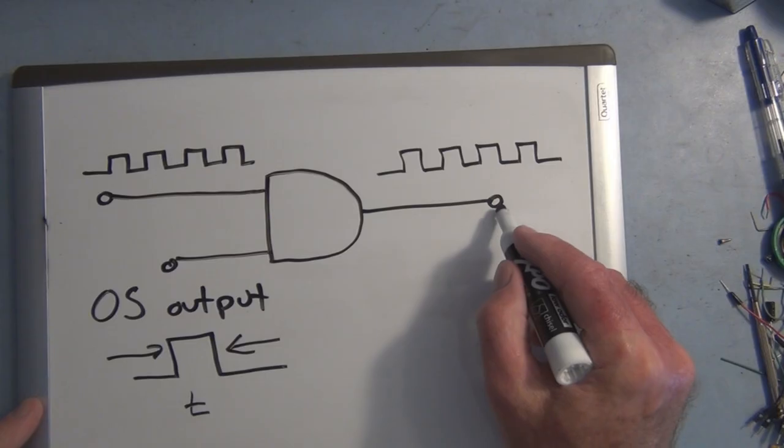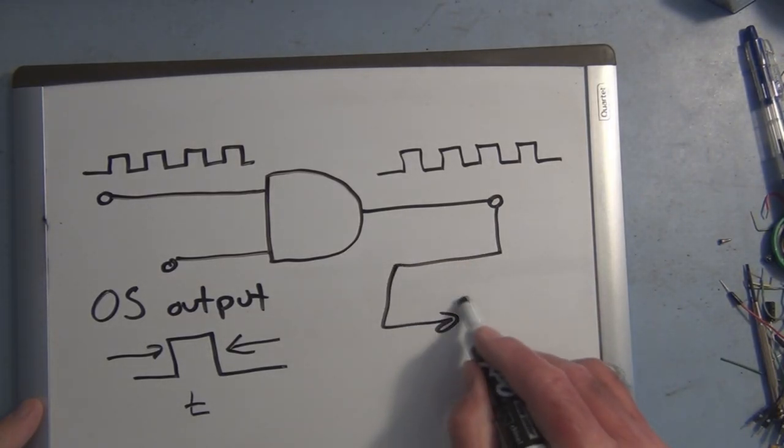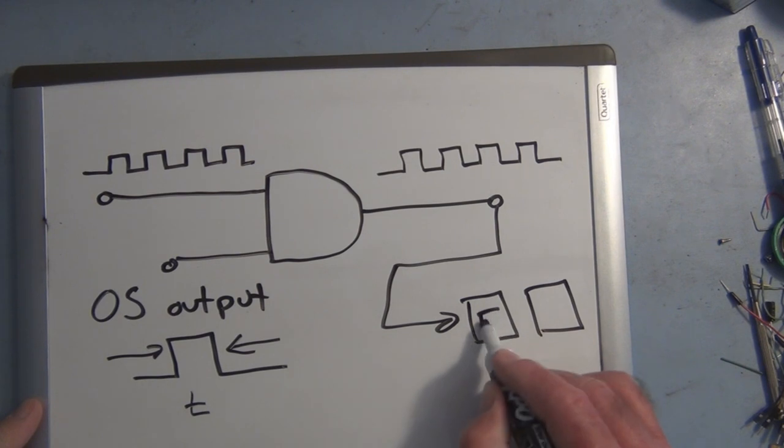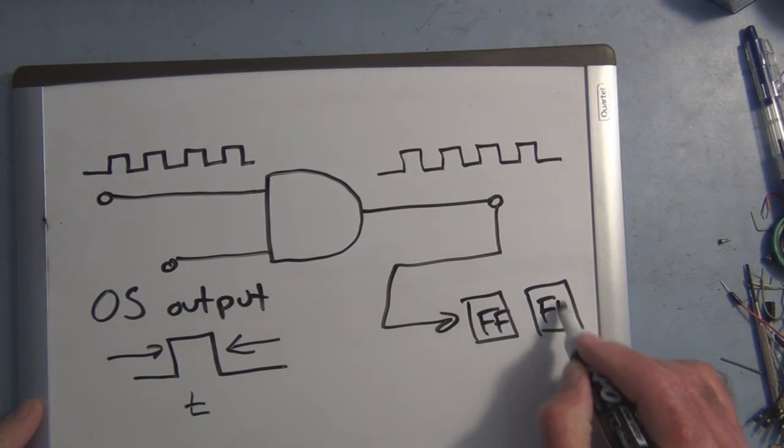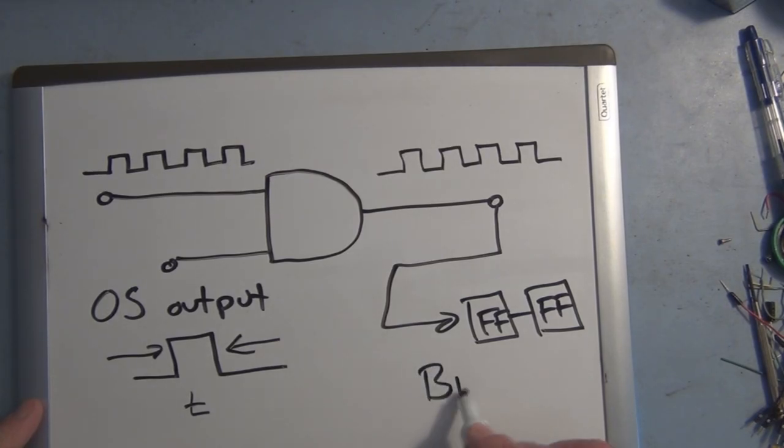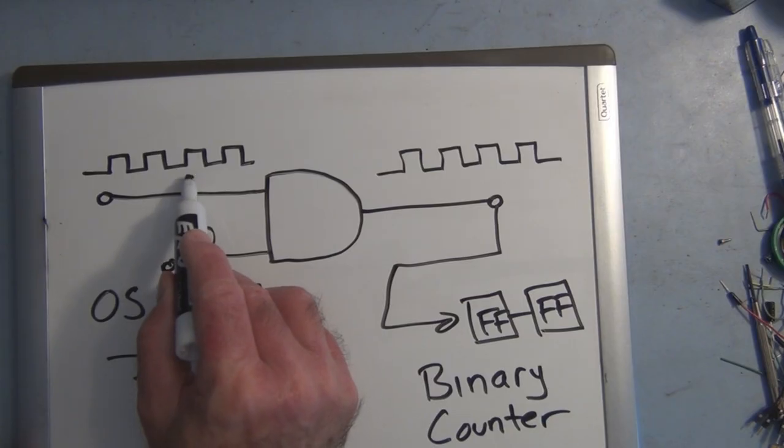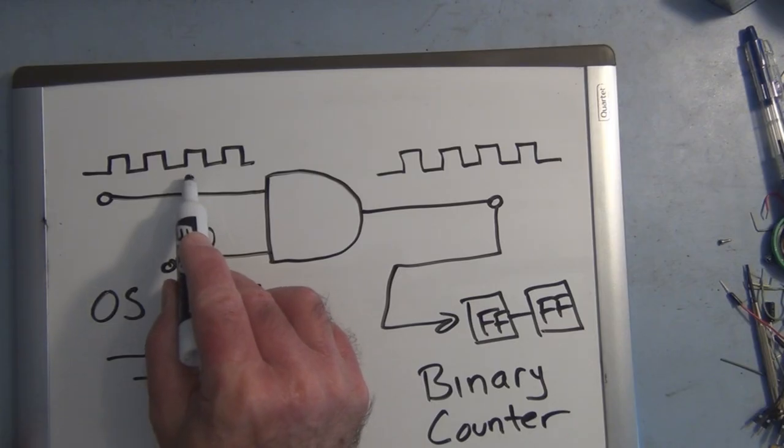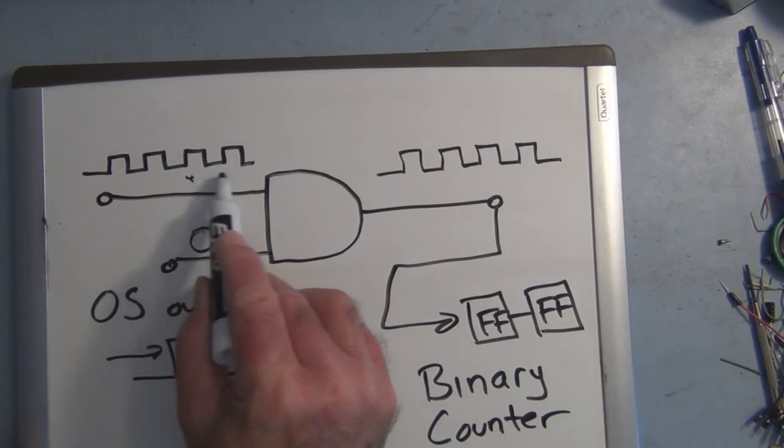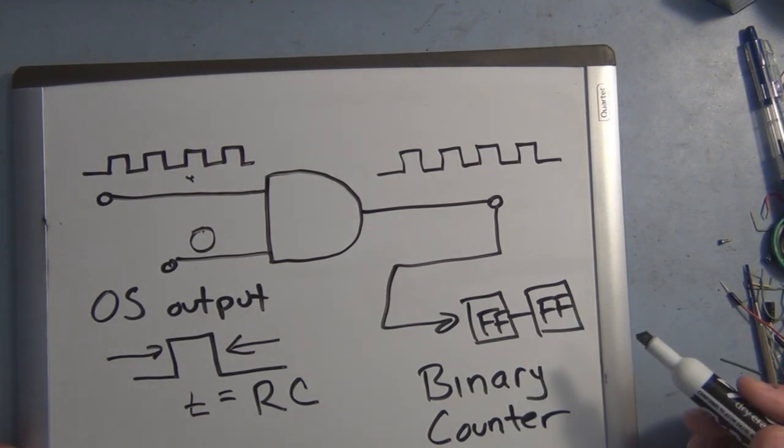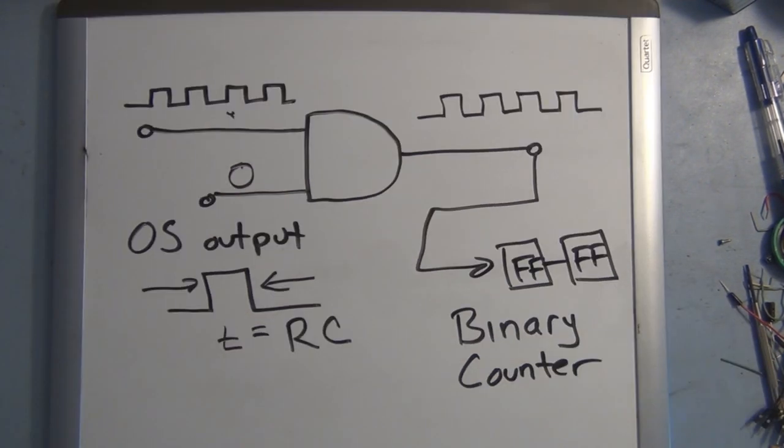So in essence this is a gateway that allows me to determine if this square wave gets through. So if this is high the square wave will be able to go through the AND gate for this period of time T. So in essence now I can count for a certain period of time. So this AND gate output then goes to an input to those flip-flops that I have.